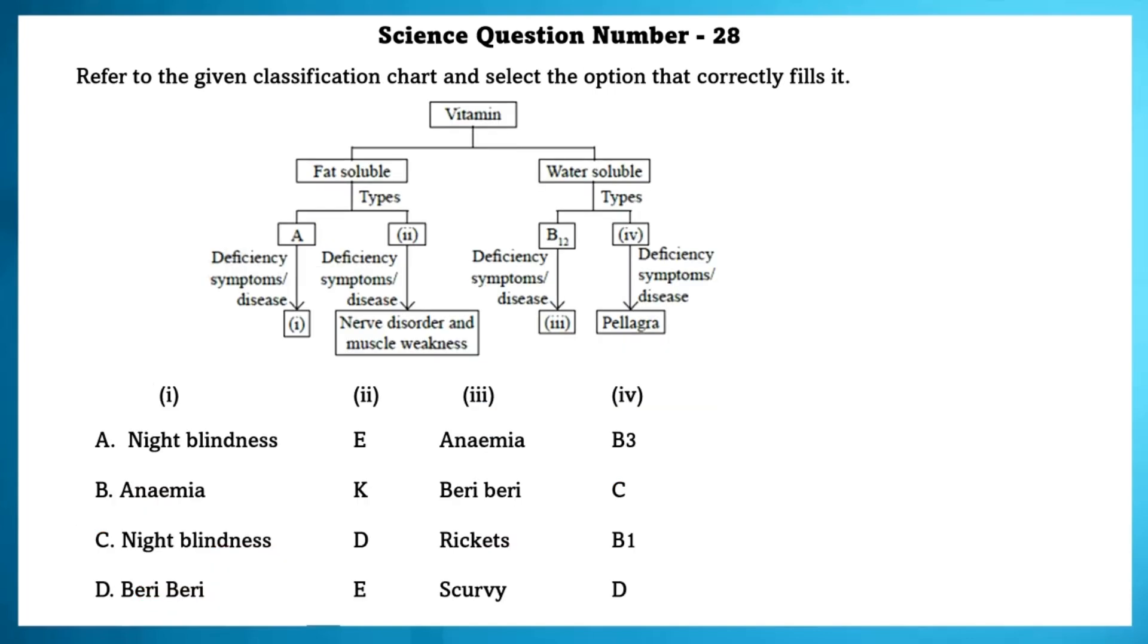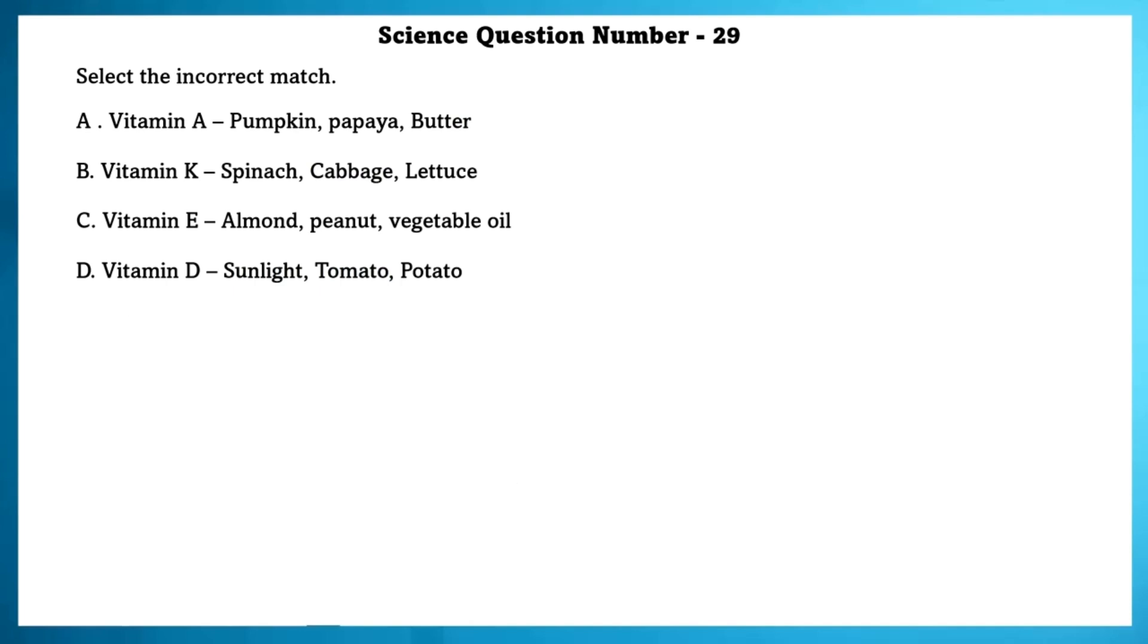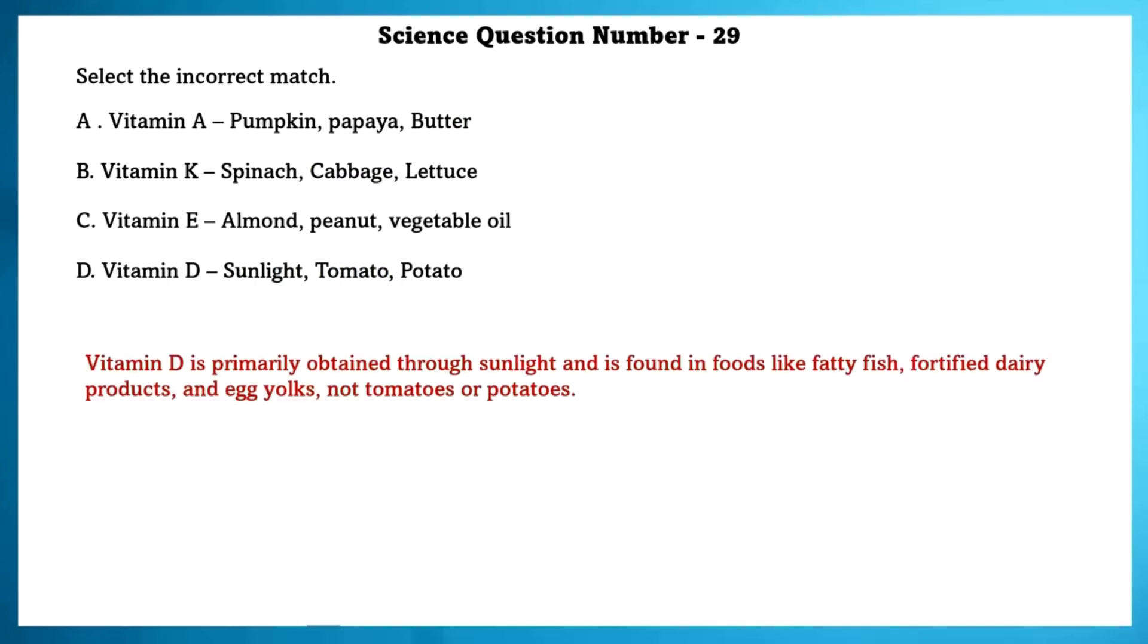Science question number 28. Refer to the given classification chart and select the options that correctly fills it. Deficiency of vitamin A causes night blindness. Deficiency of vitamin E causes nerve disorder and muscle weakness. Deficiency of B12 causes anemia and deficiency of B3 causes Pellagra. Science question number 29. Select the incorrect match. Vitamin D is primarily obtained through sunlight and is found in foods like fatty fish, fortified dairy products and egg yolks, not tomatoes or potatoes.